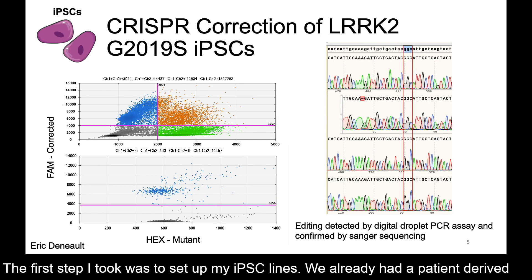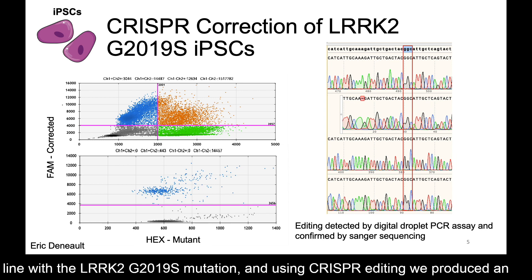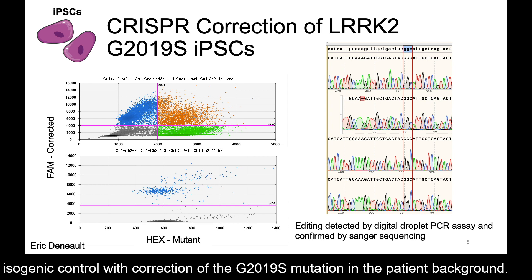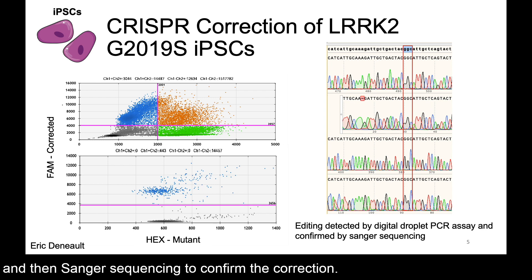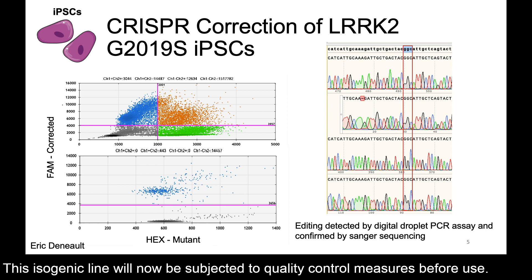The first step I took was to set up my iPSC lines. We already had a patient-derived line with the LRRK2 G2019S mutation, and using CRISPR editing, we produced an isogenic control with correction of the G2019S mutation in the patient background. We used a digital droplet PCR assay to select the cells that had been CRISPR-edited, and then Sanger sequencing to confirm the correction. This isogenic line will now be subjected to quality control measures before use in any experiments.